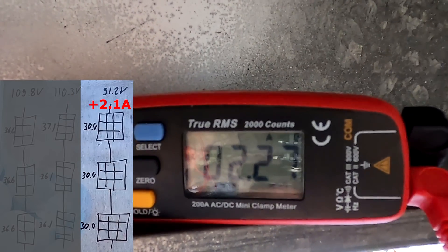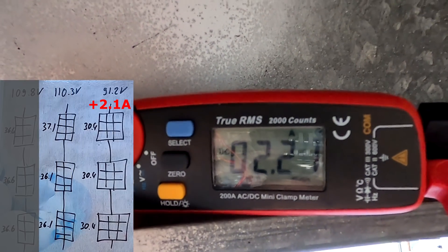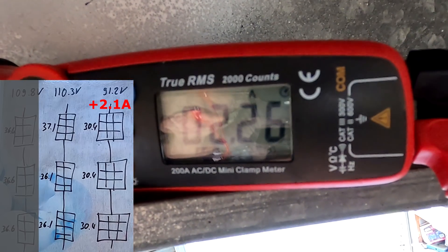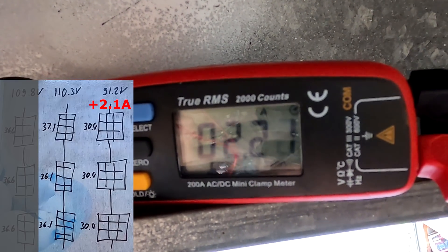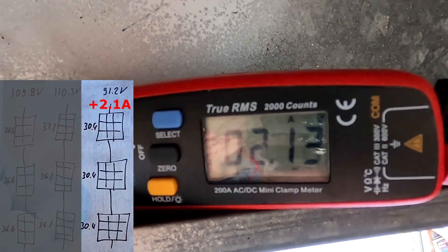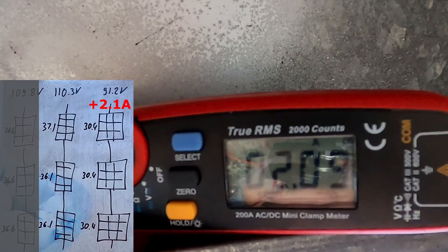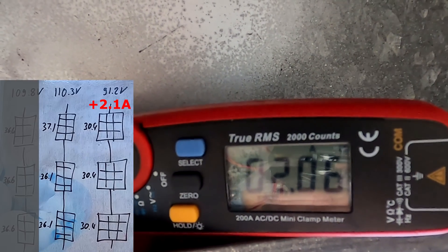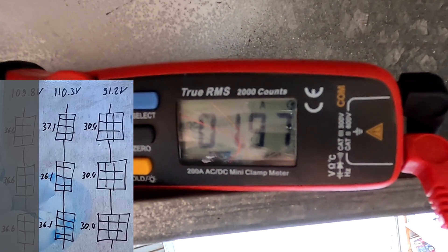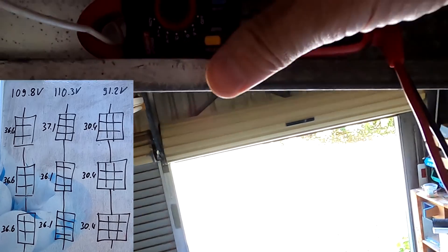I'm disconnecting the other string again. 2.3 amps. Connecting it again, 2.2. There's shading now. 2.26. Connecting it again, 2.13. Disconnecting again, it stays the same. Connecting it again. That's very interesting. I'm connecting the third one as well, still not going down. It goes down because of shading.